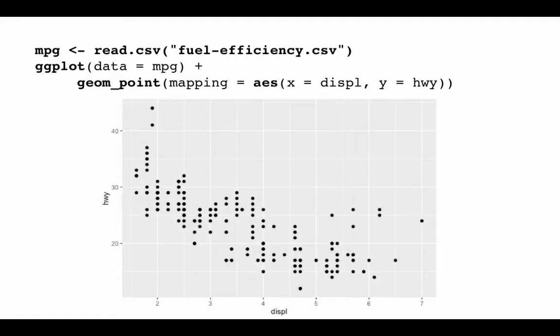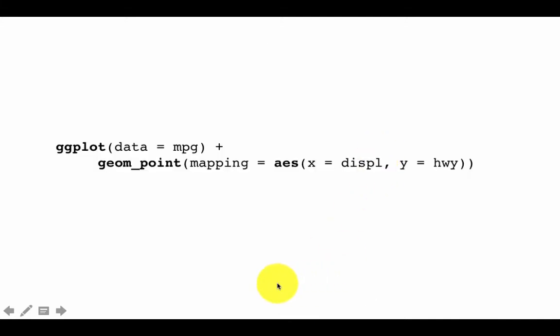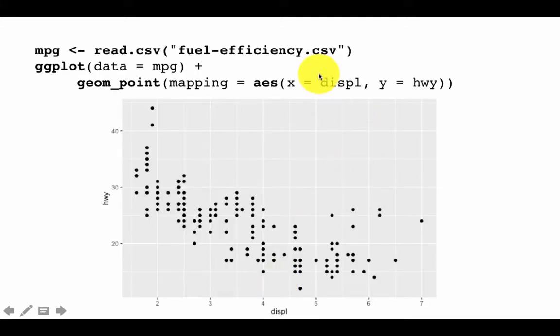Okay, so if you do this, you'll get this nice looking chart with displacement on the x-axis, as we said, highway miles on the y-axis, as we said, and each row indicated as a point, we got that because we said geom point. So that's a much better looking scatter plot than what we can get with base graphics in R.